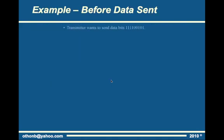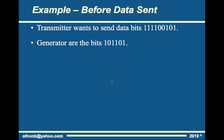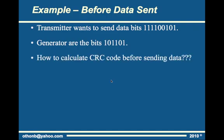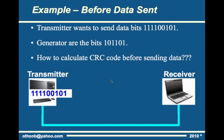Now let's see an example. Suppose that a transmitter host wants to send data bits 1, 1, 1, 1, 0, 0, 1, 0, 1 to a receiver host. Both have knowledge about the generator G: 1, 0, 1, 1, 0, 1. Before sending data, the transmitter host must calculate the CRC code to append to data, so we don't know what the CRC code is yet.